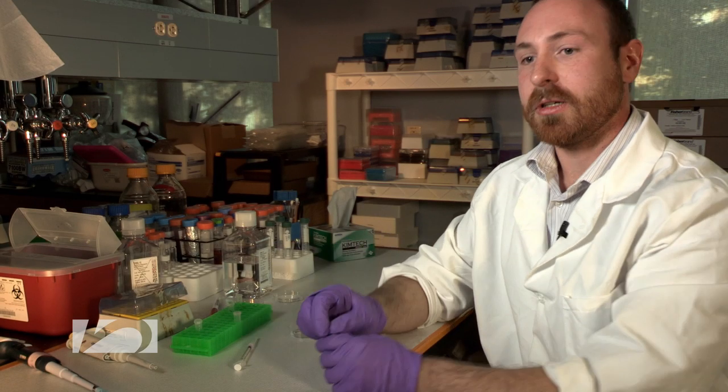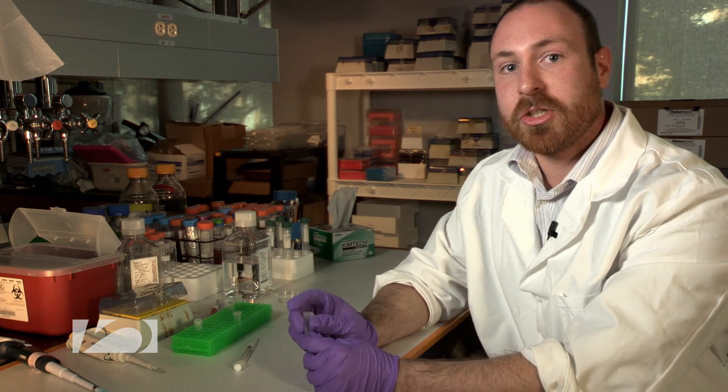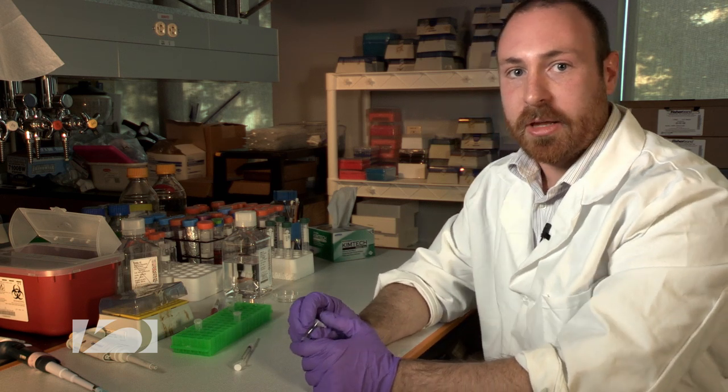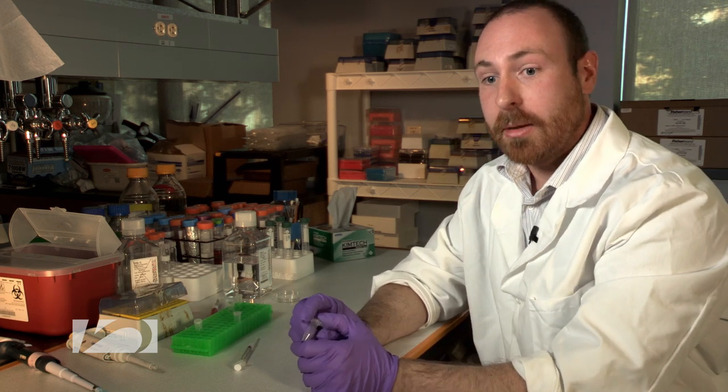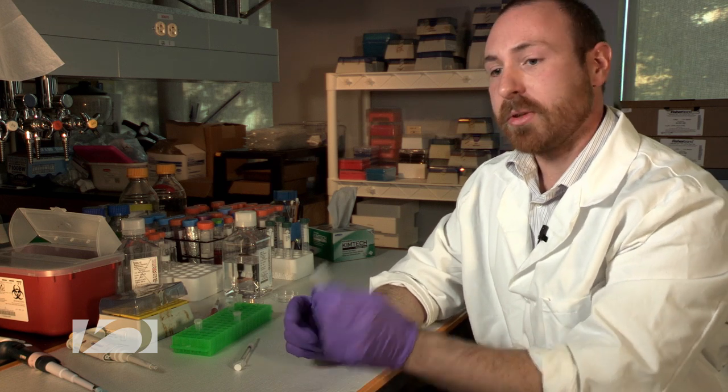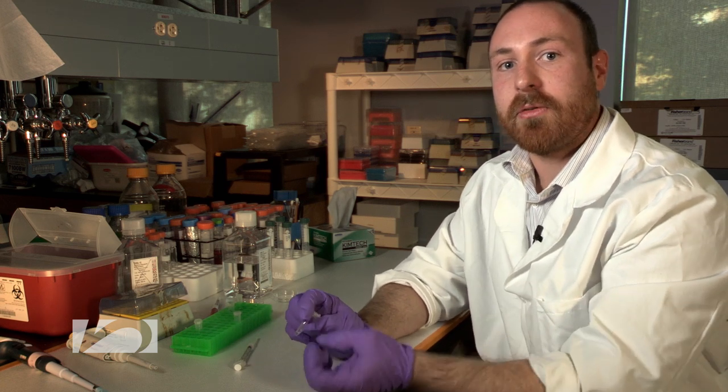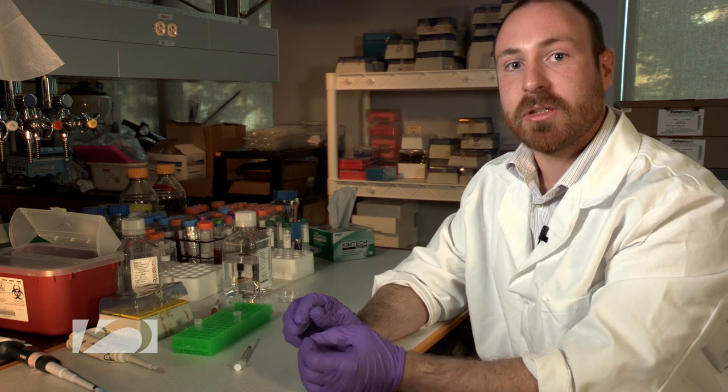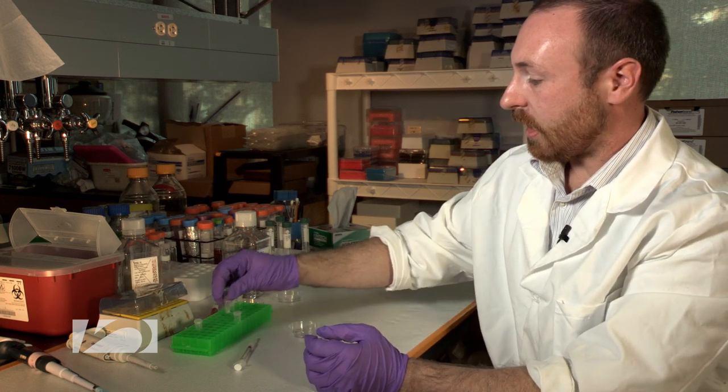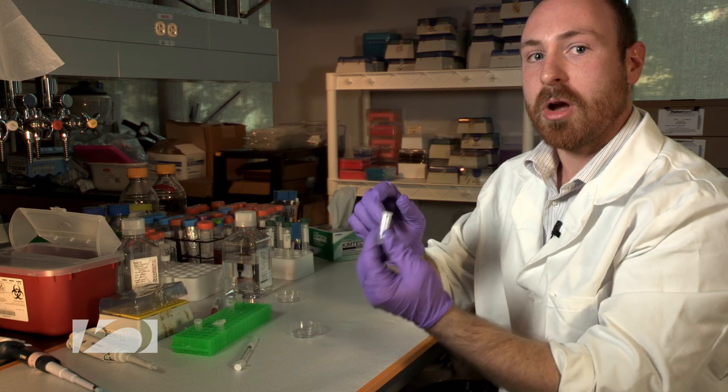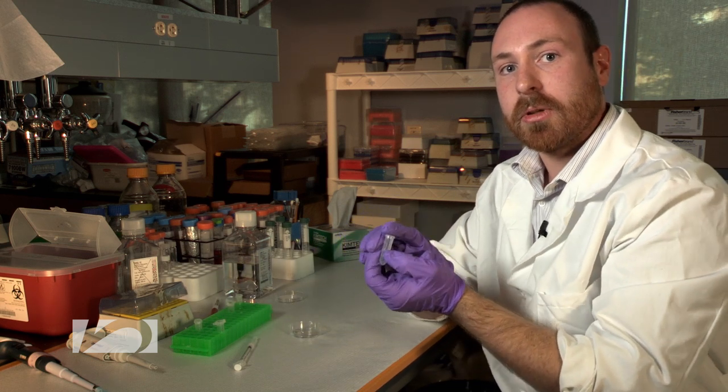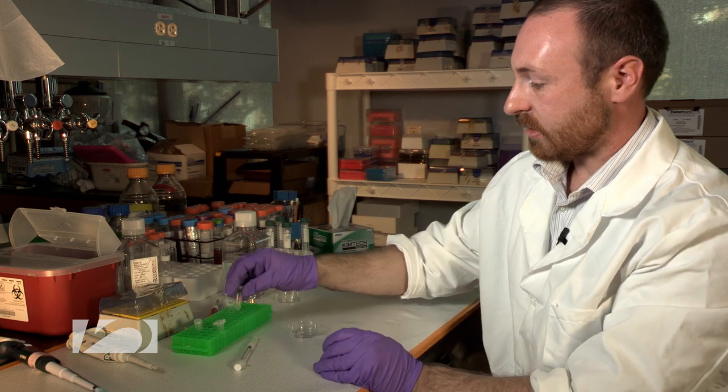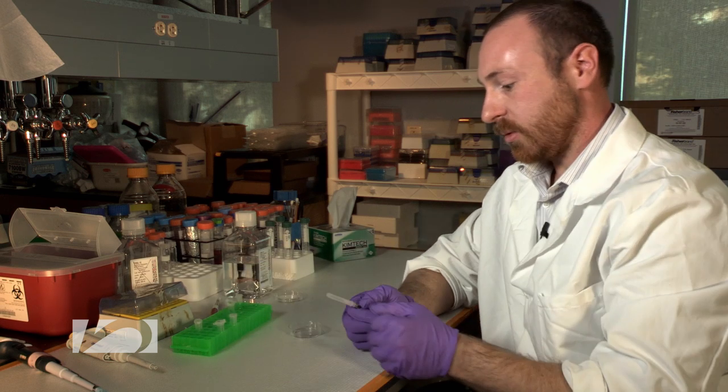In order to make the pegylated fibrin gel, we react fibrinogen, a bifunctional polyethylene glycol molecule, and IGF-1. This causes covalent binding of fibrinogen to IGF-1. When we mix it with thrombin, it causes polymerization through the normal clotting reaction. And that's how we make our pegylated fibrin gel.